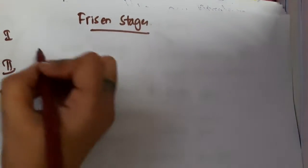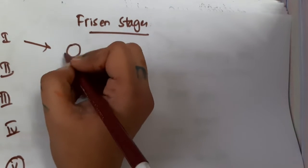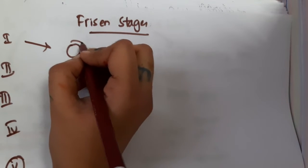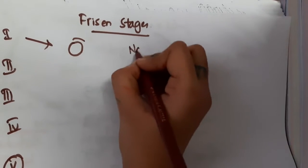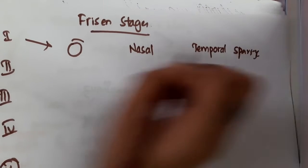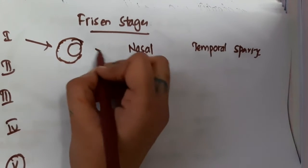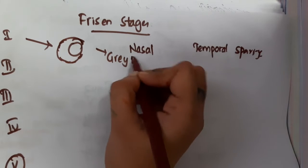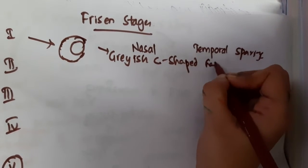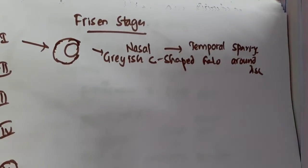In the Frisson stages of papilledema, stage one is mainly about the optic disc. The optic disc will be chrysanthemum in shape, or C-shaped, and a grayish hollow will be seen. This is because papilledema mainly starts from the nasal side, so there is temporal sparing. Because of nasal fiber involvement predominantly and temporal fibers being spared, you see a grayish C-shaped hollow around the disc.